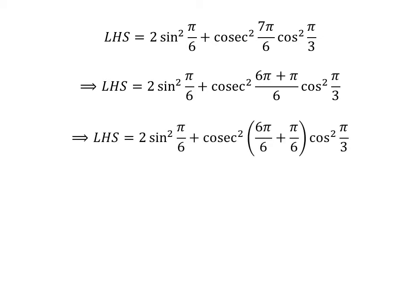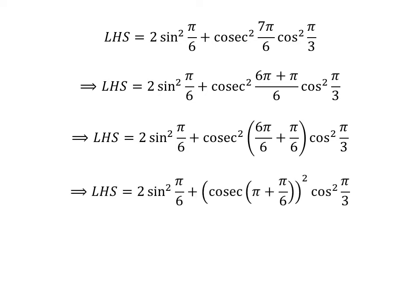We can express the fraction 6 times pi plus pi upon 6 as 6 times pi upon 6 plus pi upon 6. Cancelling out the common factor 6, we get the left-hand side of the equation equal to 2 times square of sine of pi upon 6 plus square of cosecant of pi plus pi upon 6 times square of cosine of pi upon 3.